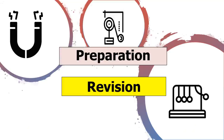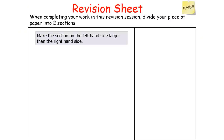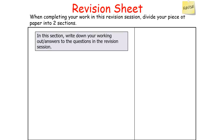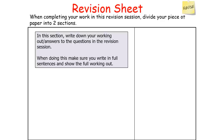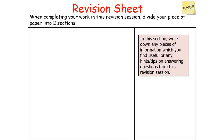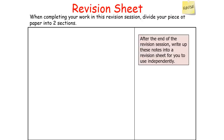When completing your work in this revision session, divide your piece of paper into two sections. Make the section on the left-hand side larger than the right-hand side. In the left-hand side section, write down your answers and working out. Make sure you write your answers in full sentences and show your full working out. On the right-hand side, write down any useful information or hints and tips. At the end of the session, write up these notes into a revision sheet.